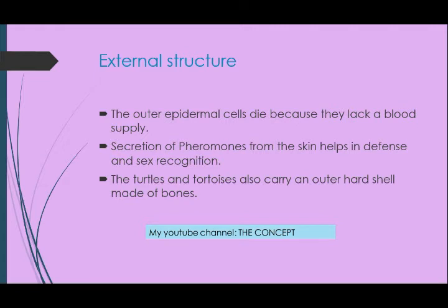Turtles اور tortoises کے بارے میں اہم بات یہ ہے کہ ان کی body کی اہم ترین external feature یہ ہے کہ اس کے اوپر ایک hard shell ہوتی ہے۔ یہ shell basically دو pieces میں مشتمل ہوتی ہے: carapace اور plastron۔ اور اس کی development کچھ specific bones سے ہوتی ہے۔